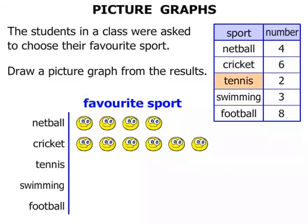How many for Tennis? There were two — so that's right, one, two smiley faces. Swimming — there were three people who chose that, so here we go: one, two, three for swimming.